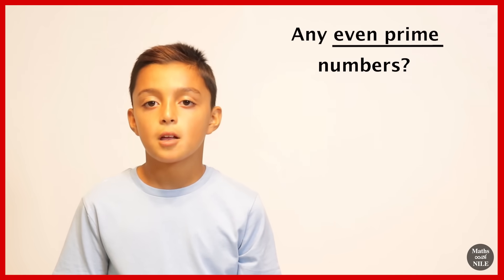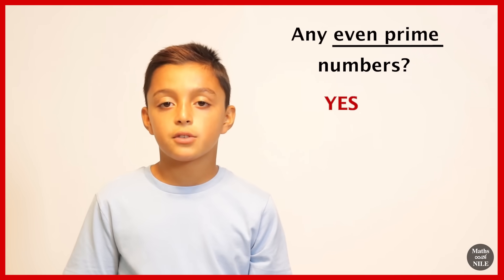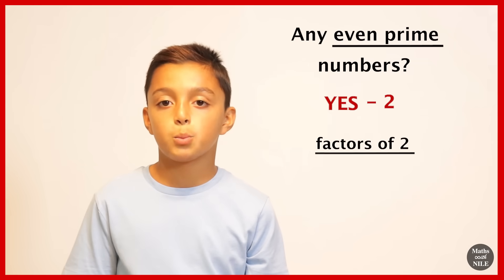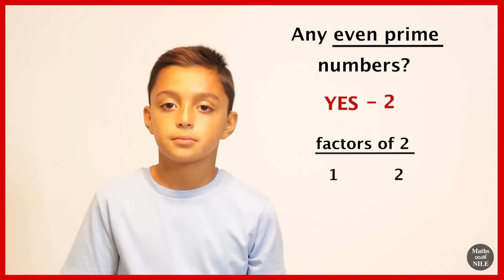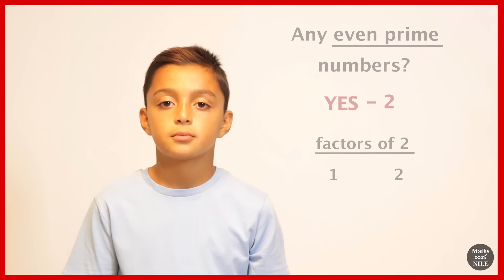Are there any even prime numbers Niall? There is only one even prime number, which is two, because only one and two can go into two. Brilliant. So two is an even prime number. Why isn't there any other even prime numbers? Because two can go into all other even numbers. So it will always have more than two. Yes, it will always have at least three. Brilliant.